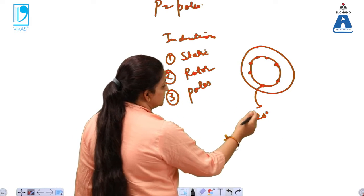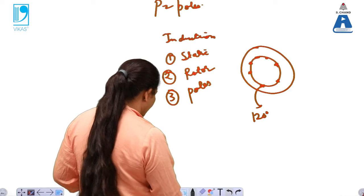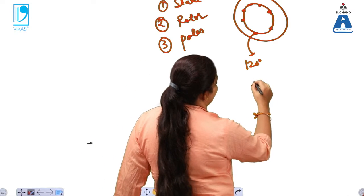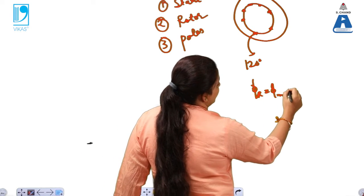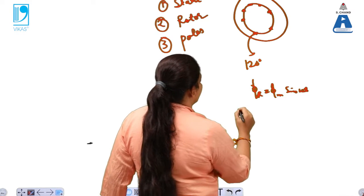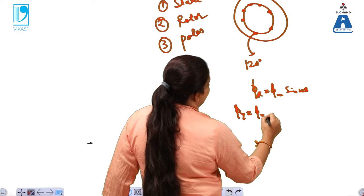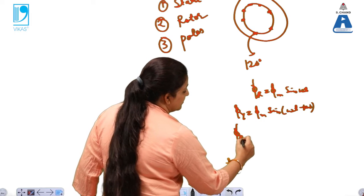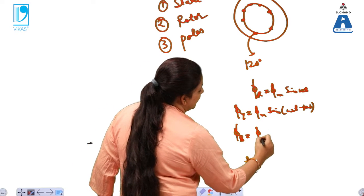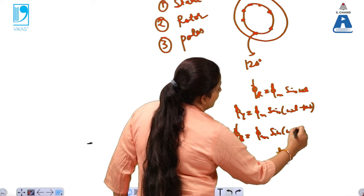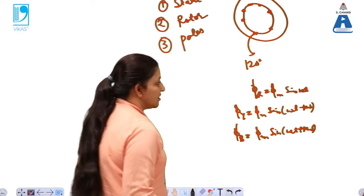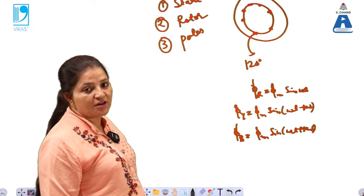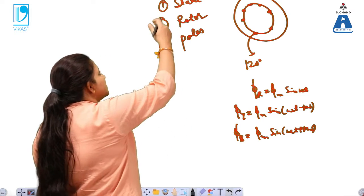Around the poles, the three windings are connected to each other with an angular difference of 120 degrees. The flux in the R winding is given as φm·sin(ωt), the flux in the Y winding is φm·sin(ωt − 120°), and the flux in the Blue winding is φm·sin(ωt + 120°). These three windings are thus connected with a 120-degree phase difference.